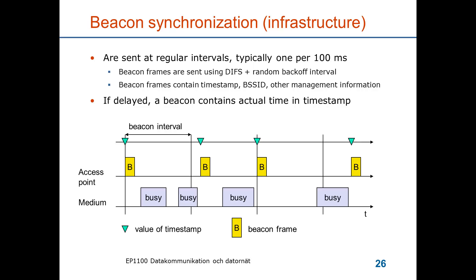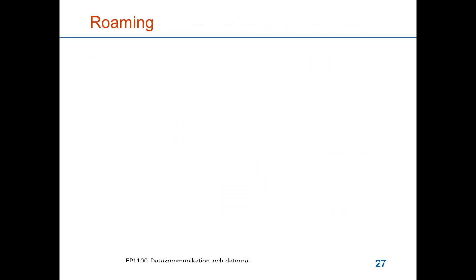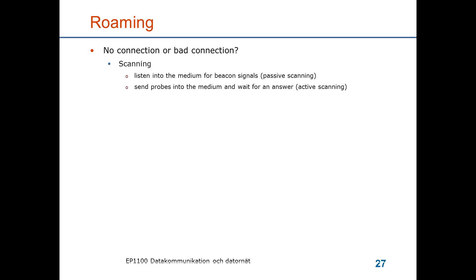It's important for wireless networks supporting mobile communication to allow nodes to roam — both because users walk around and because a connected node may have poor signal quality. In both cases, the mobile node will scan by listening for beacon signals; this is called passive scanning. Since access points send beacons every 100 milliseconds, listening for 100 milliseconds on one channel is sufficient. There is also active scanning, where the mobile node sends a request and any access point on the channel answers immediately.